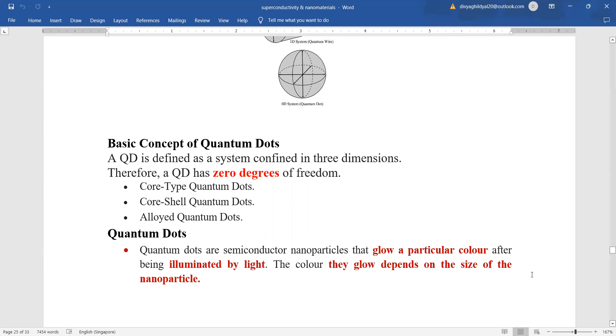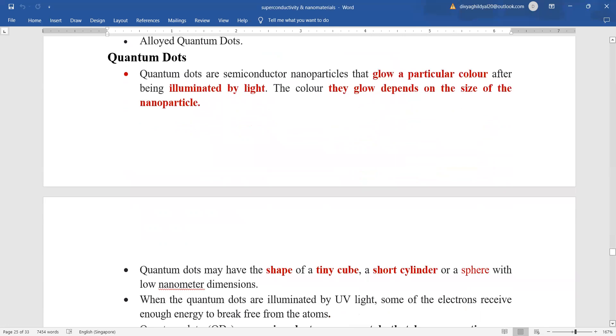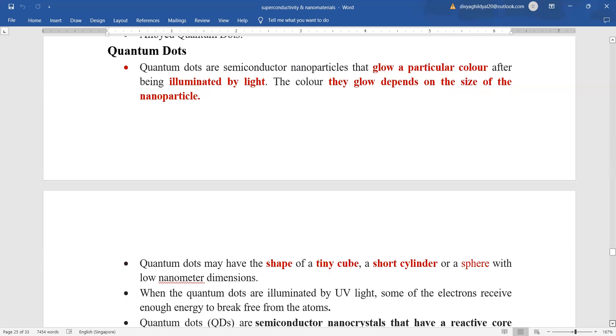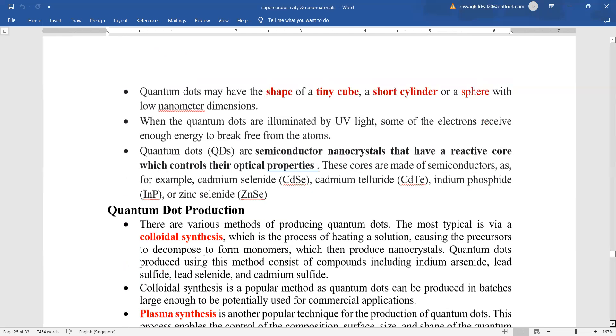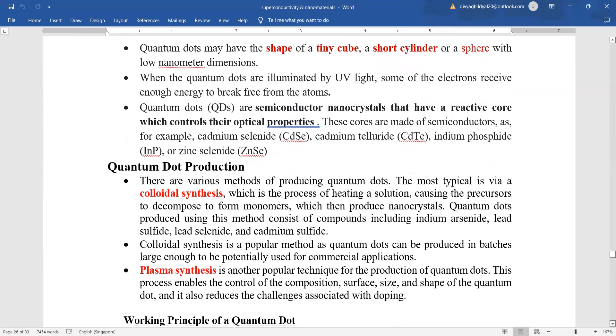So, quantum dots are semiconductor nanoparticles that glow a particular color after being illuminated by light. The color they glow depends on the size of the nanoparticle. Quantum dots can have the shape of a tiny cube, a short cylinder or a sphere with nanometer dimensions. When these quantum dots are illuminated by ultraviolet light, some of the electrons receive enough energy to break free from the atoms. So, quantum dots control optical properties.